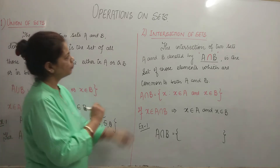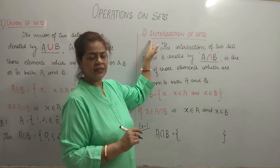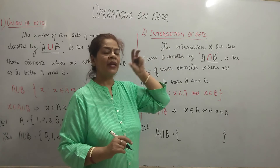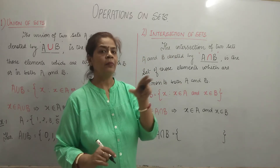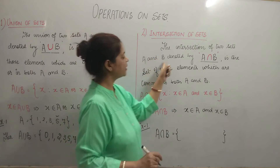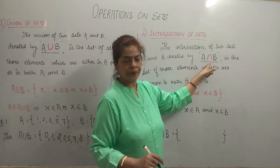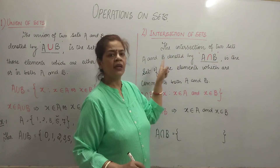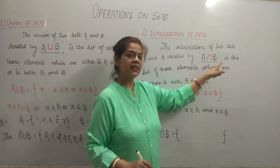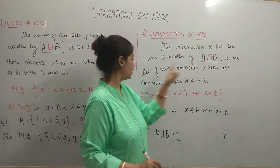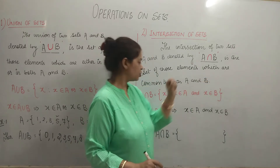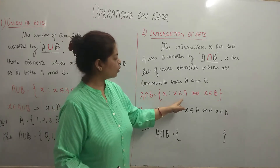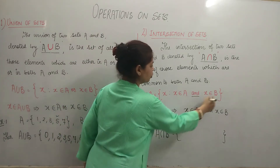Now moving to the next operation: this is intersection of sets. Intersection means we are taking common elements of A and B, and this operation is represented by the inverted cup symbol — A intersection B. The intersection of two sets A and B, denoted by A intersection B, is the set of all those elements which are common to both A and B. So A intersection B can be represented as: X such that X belongs to A and X belongs to B.